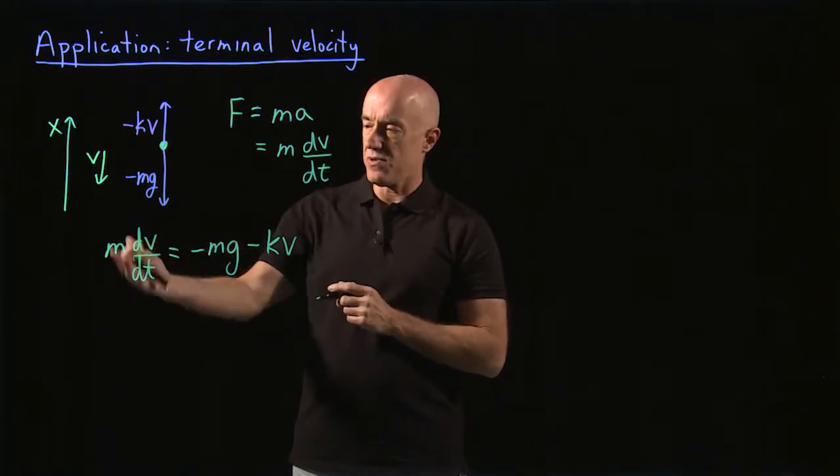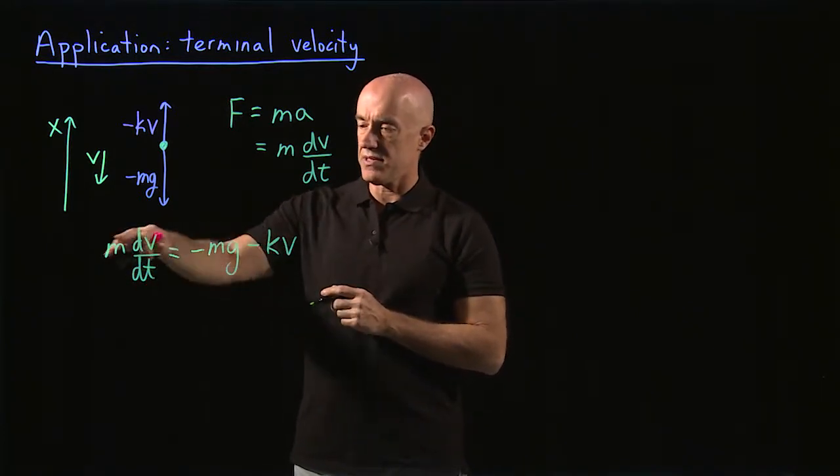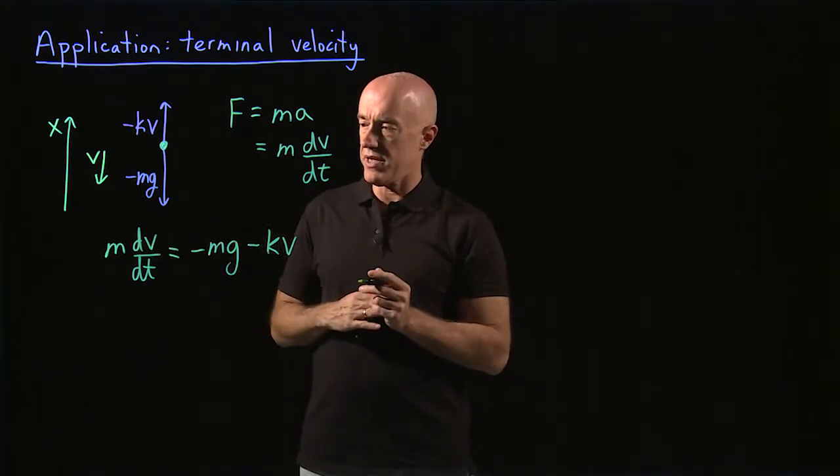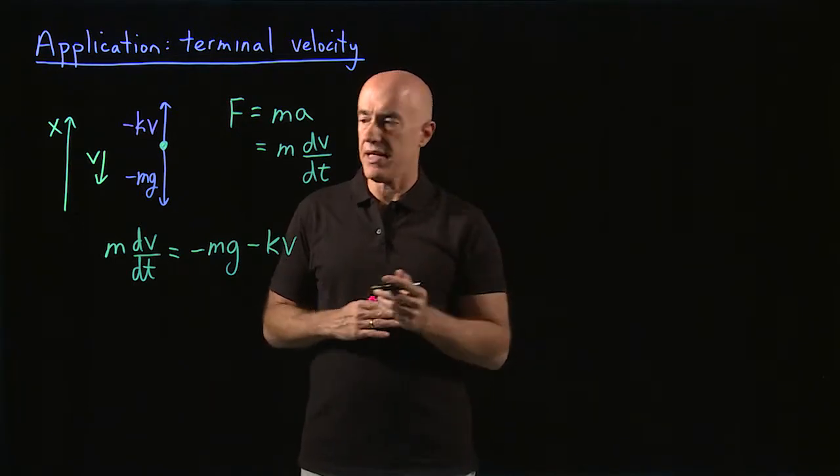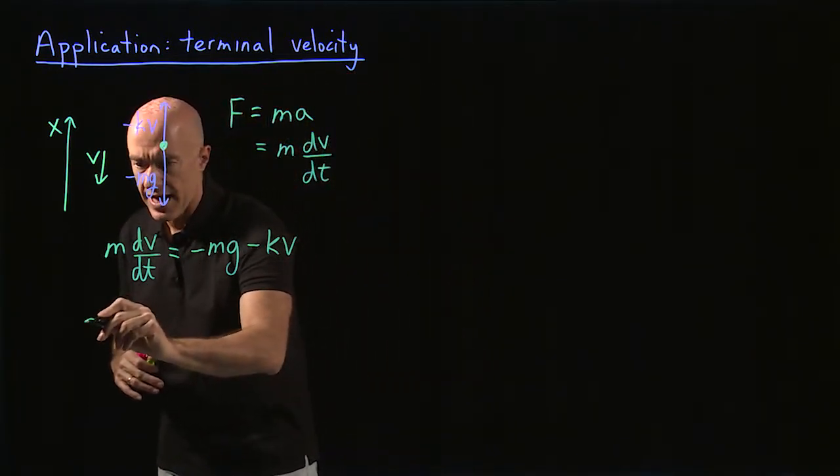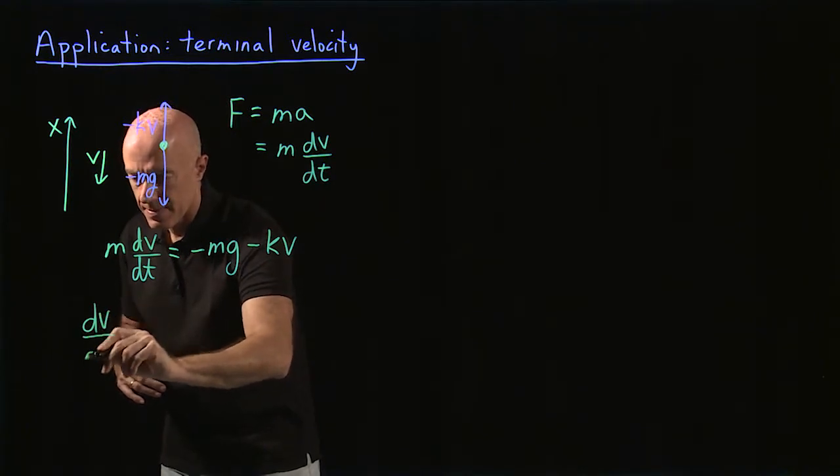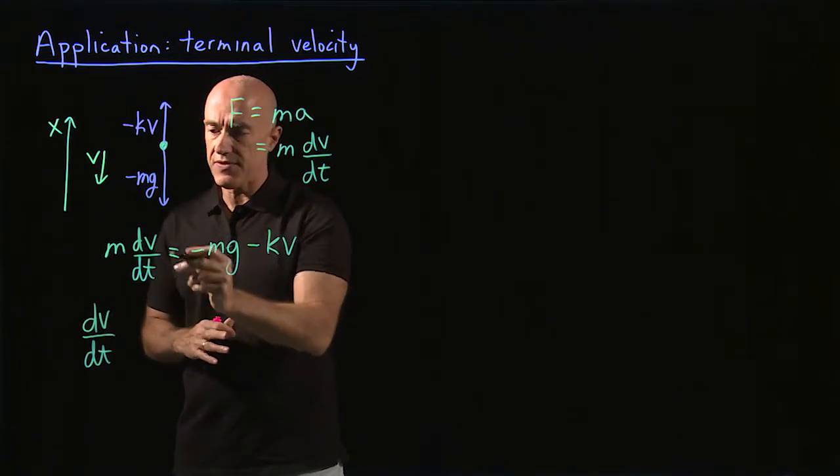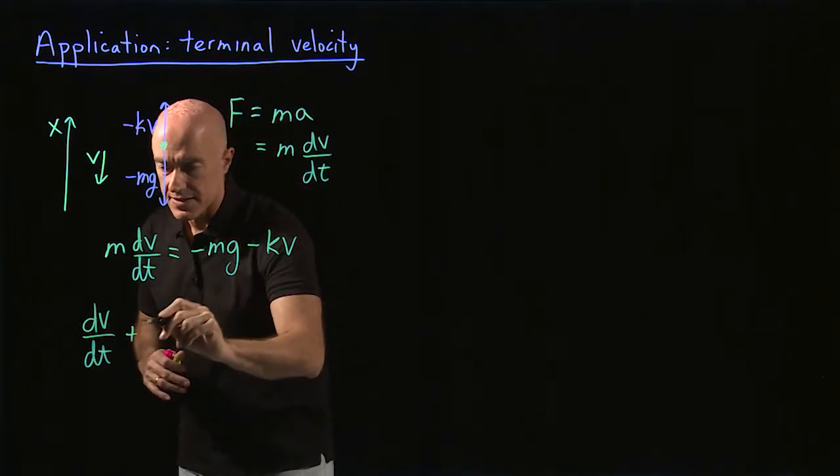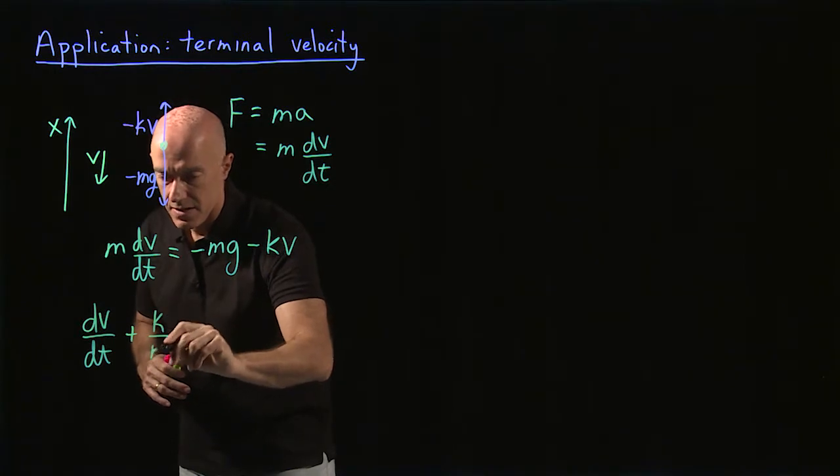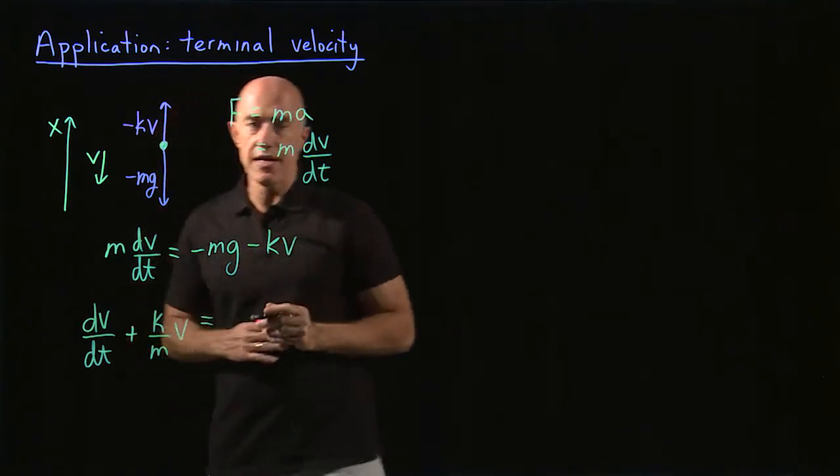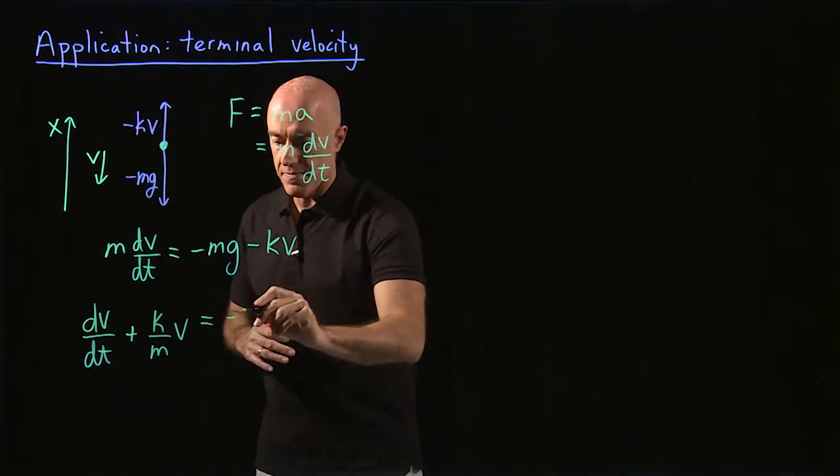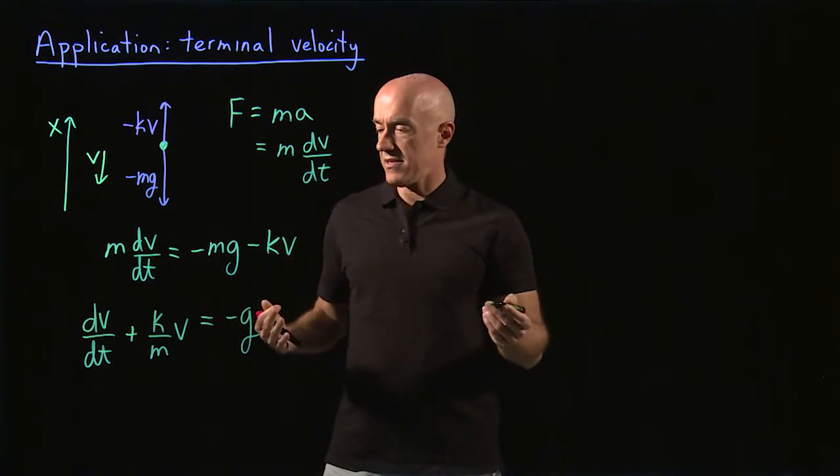The independent variable is t. The dependent variable is the velocity. We see that this is a linear first order equation. So we can put it in standard form. So then we have dv dt. And then we bring the plus kv over to the left side, divide through by m. So plus k over m times v. And the right hand side is minus mg divided by m. So it will be minus g.